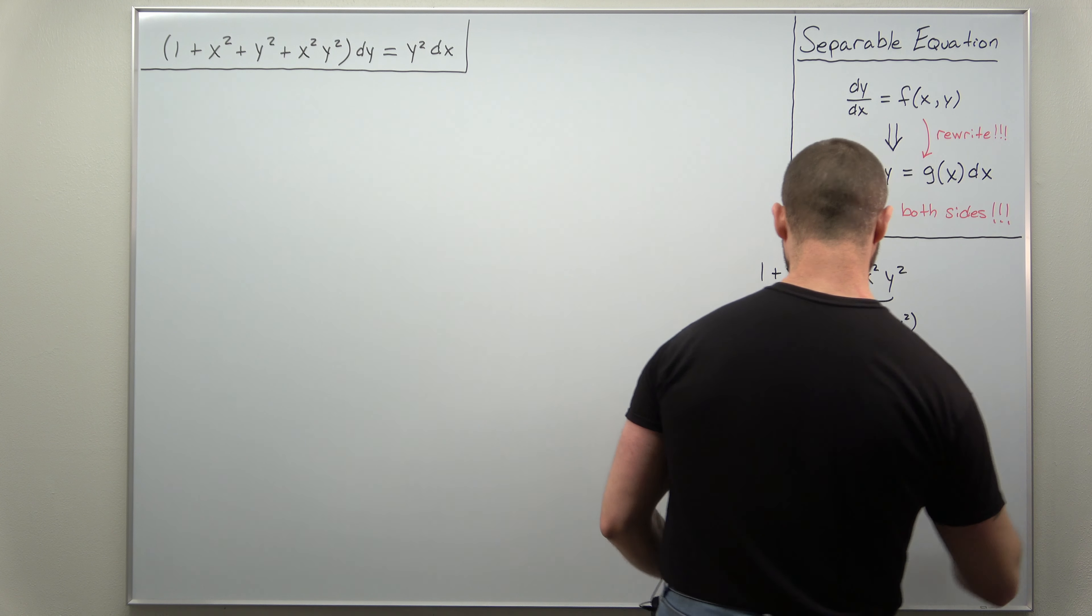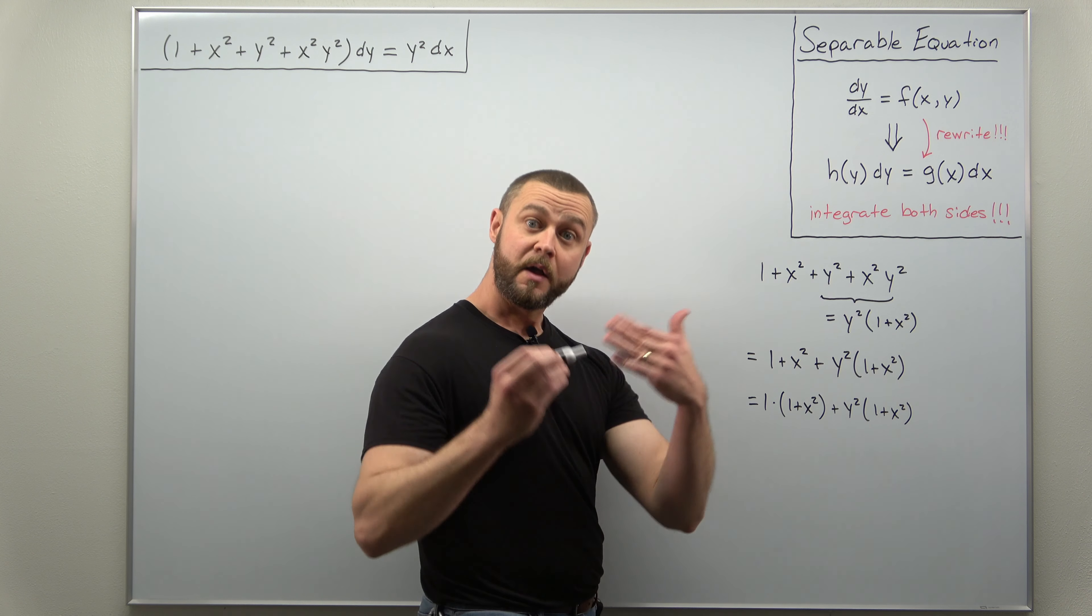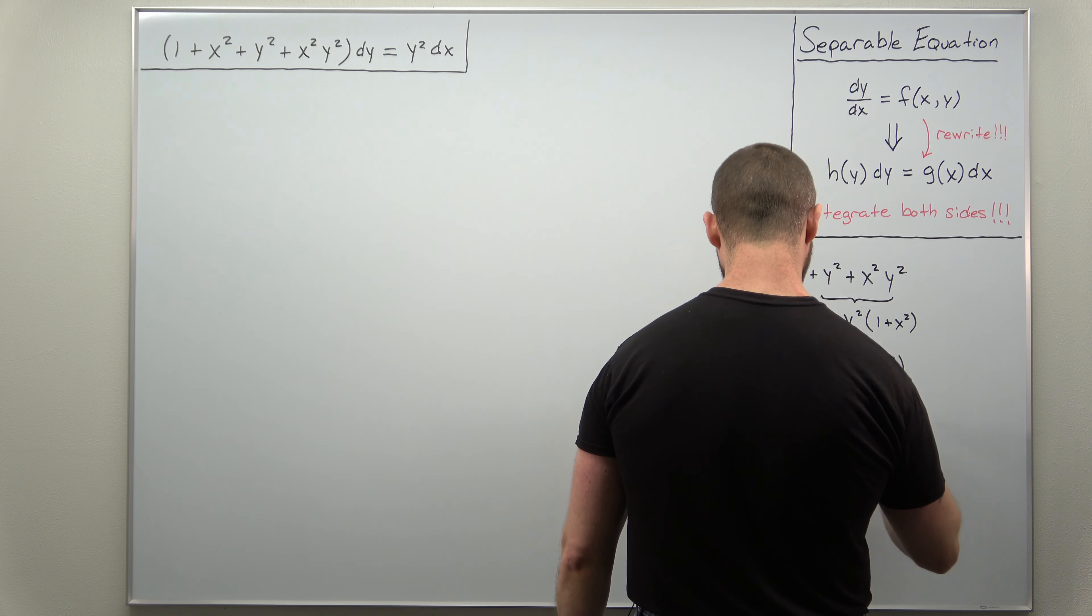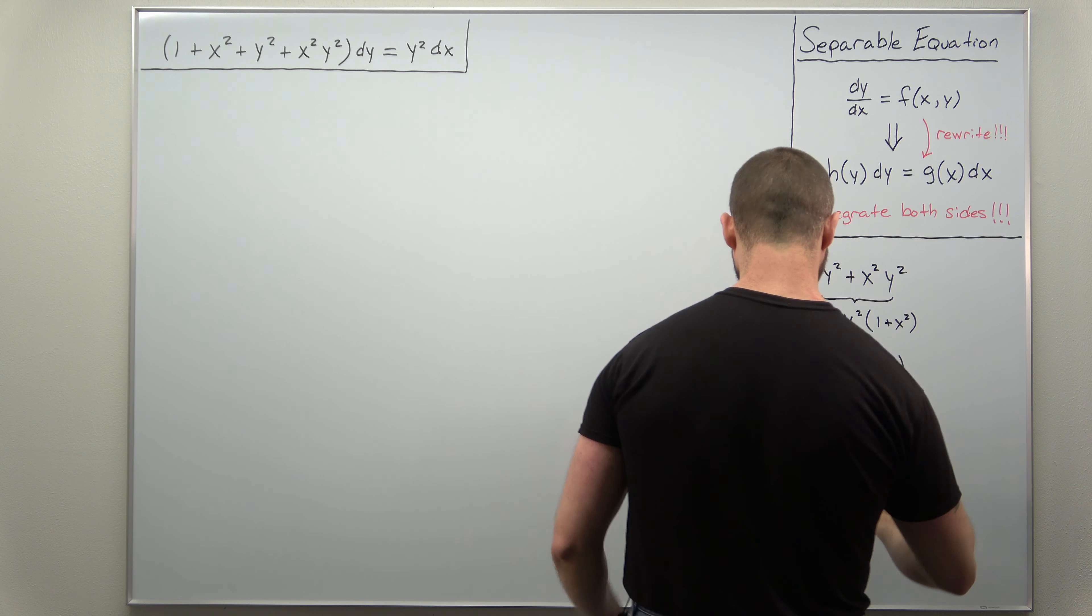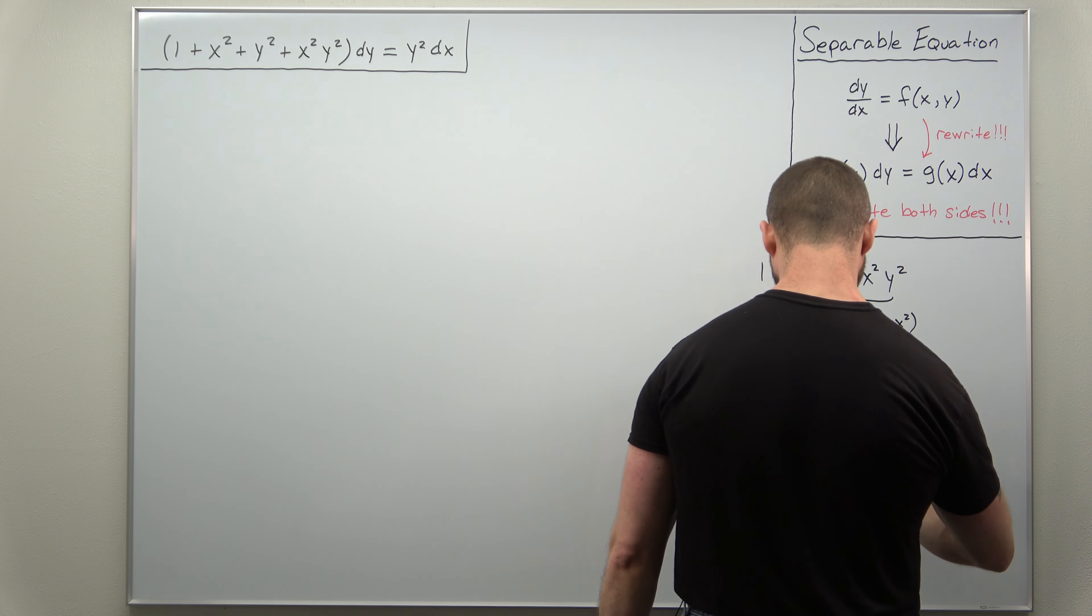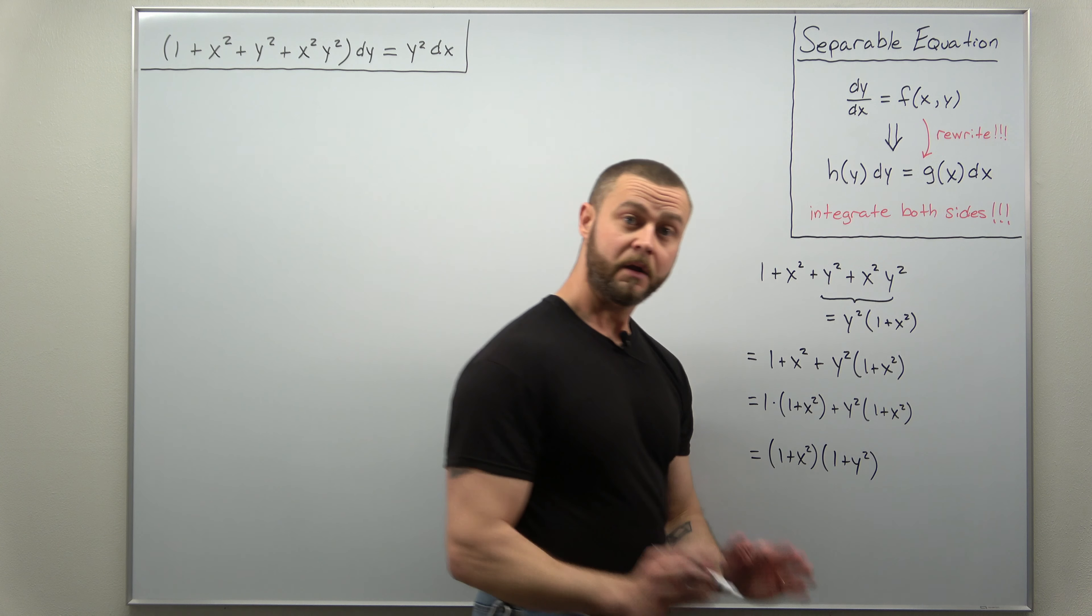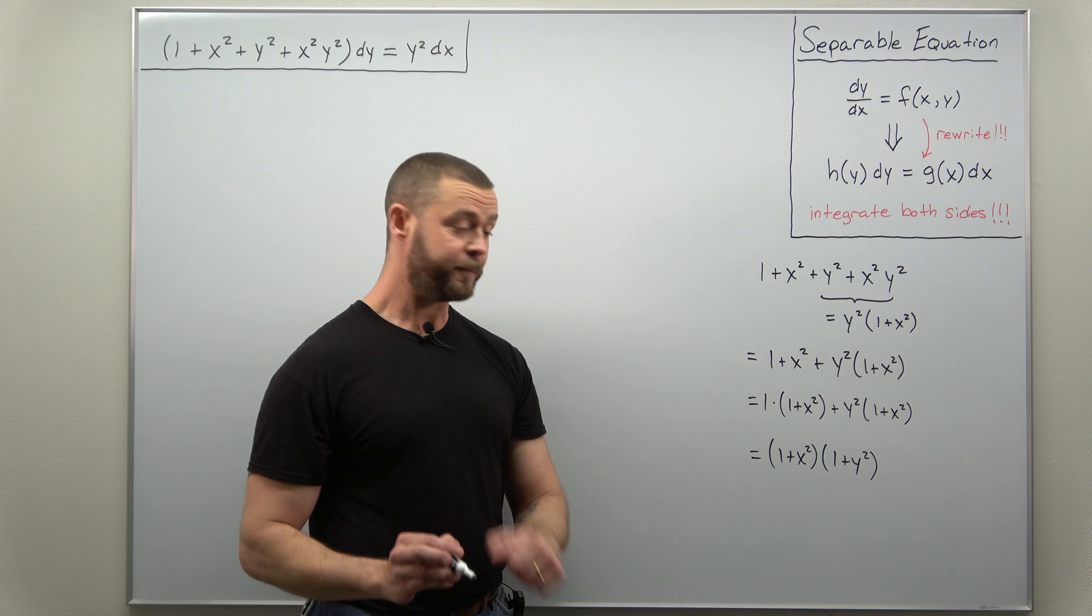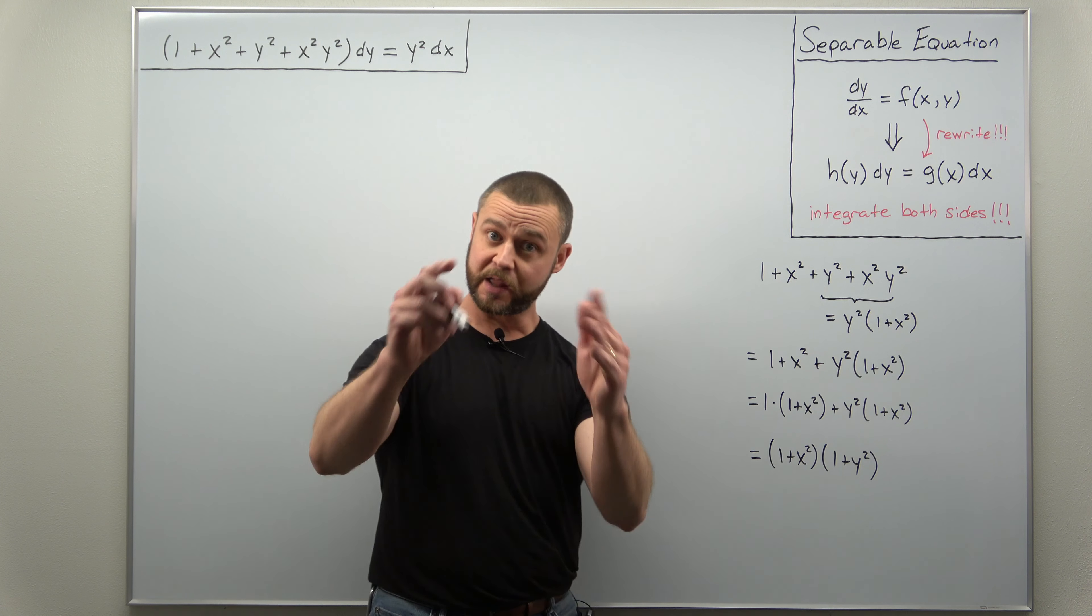And from there you can see that you can factor out 1 plus x squared, and you'll be able to completely factor those four terms. If you factor out 1 plus x squared, the other term that you're left with is 1 plus y squared. And that is the key to this differential equation being separable.